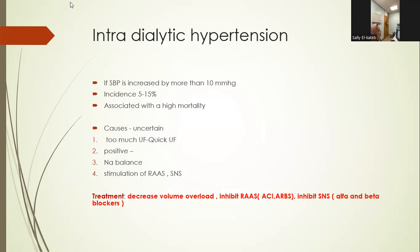Moving on to intradialytic hypertension: if the systolic blood pressure increases more than 10 mmHg during dialysis, it is considered intradialytic hypertension. The incidence is not very common — five to fifteen percent — but it is associated with high mortality. The causes are uncertain; one theory suggests that with rapid ultrafiltration, if the autonomic system is working properly, the sympathetic system sends messages and vessels constrict, causing tachycardia, increased cardiac output, and ultimately intradialytic hypertension. Positive sodium balance can also cause it.